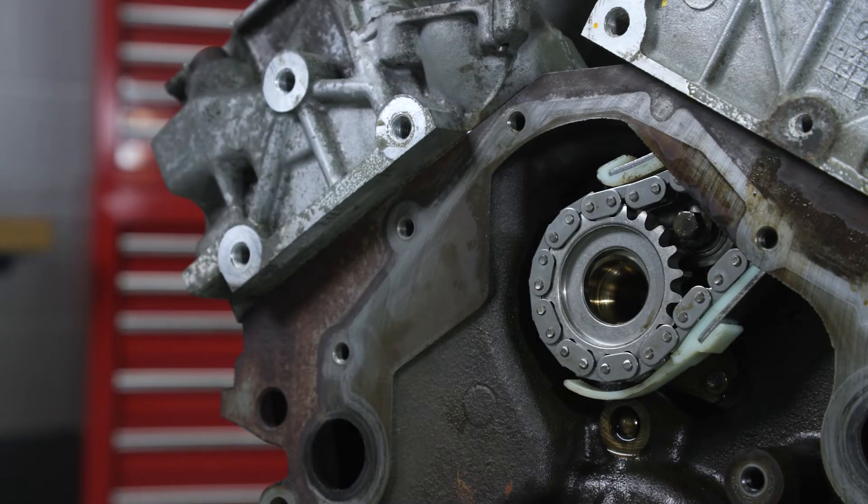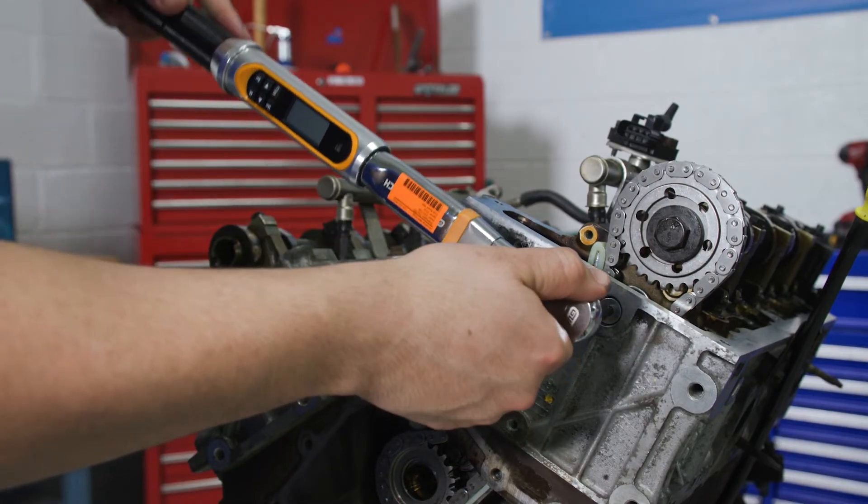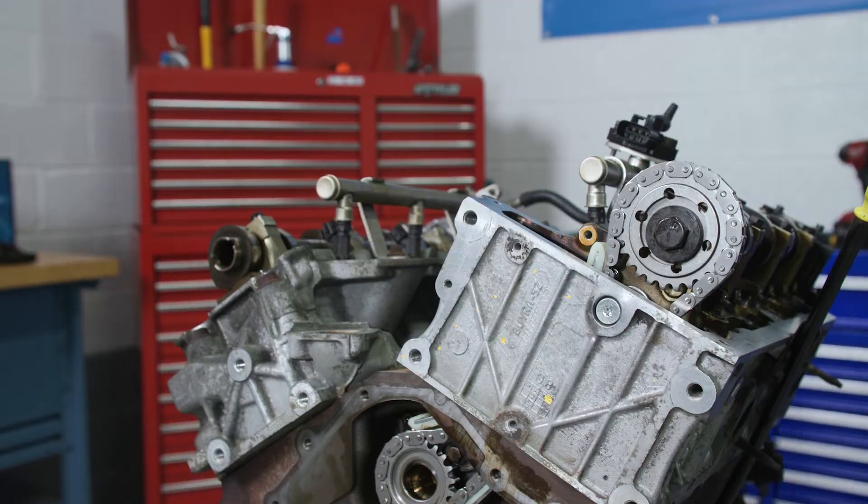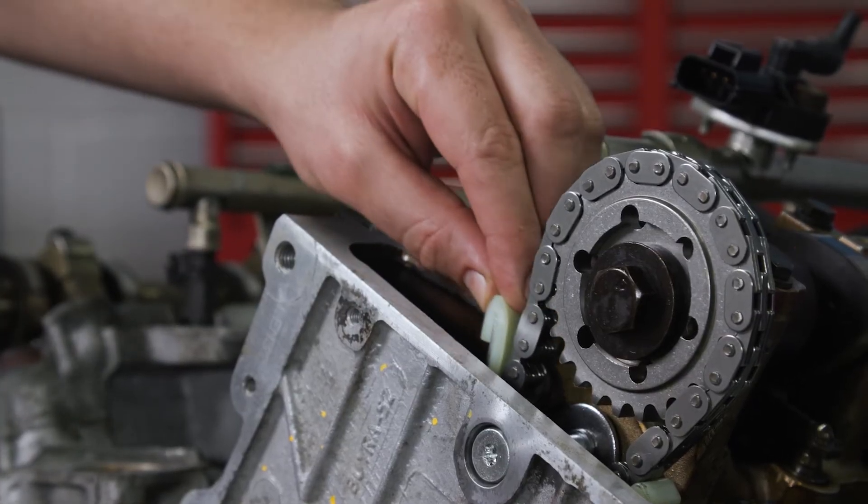Torque the lower bolt to 14 foot-pounds and the upper one to 9 foot-pounds. Double check that the guide assembly is pivoting freely.